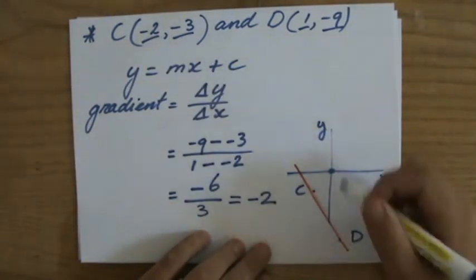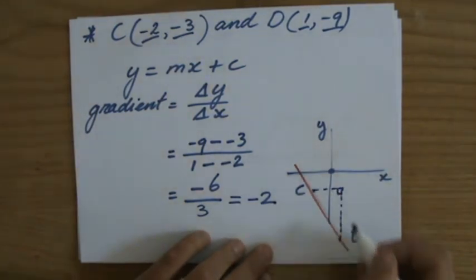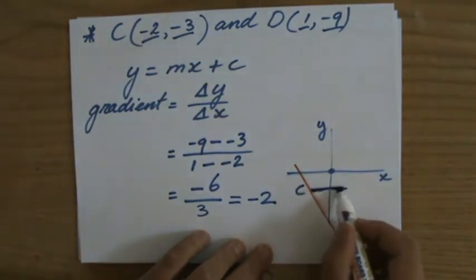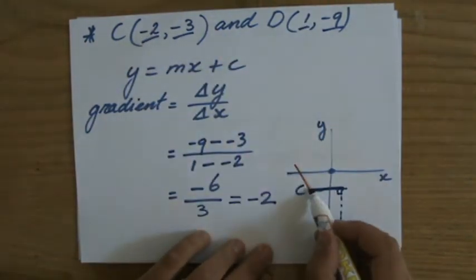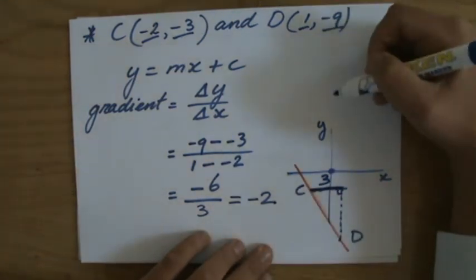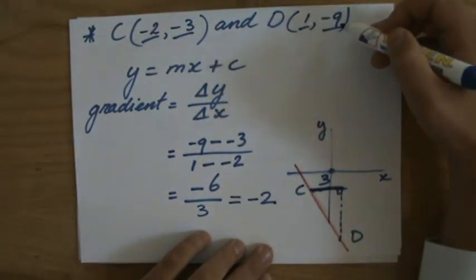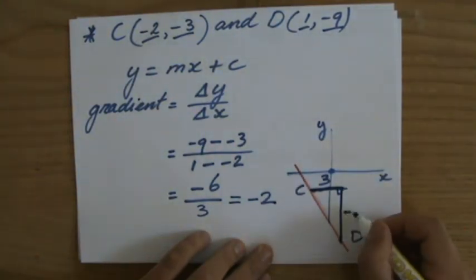From -2 to 1, how far does he travel horizontally? From -2 to 1, so that is two steps and another one, so three steps. And how much does he go down? From -3 to -9. So he's going six down, or -6.